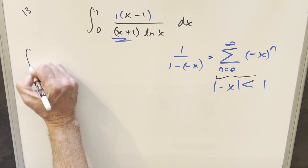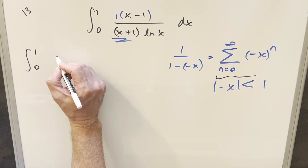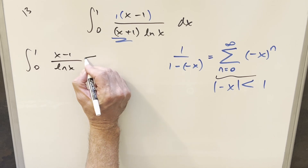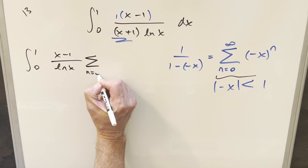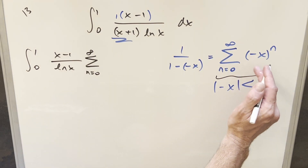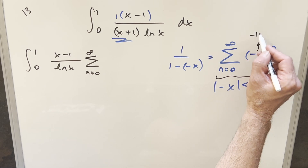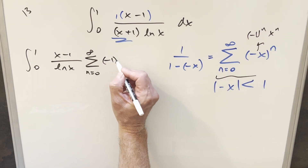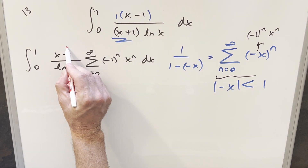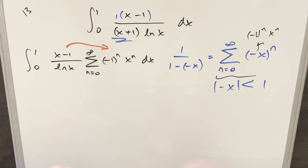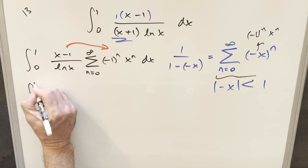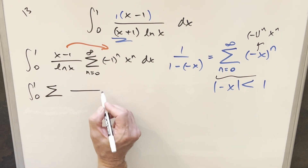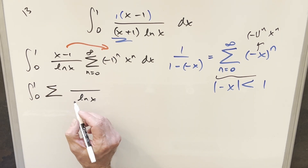So we take this and plug it back into our integral. We haven't touched x minus 1 over ln(x), so we bring that over. When we plug in the series, let's break up the minus 1 — we'll write it as (minus 1) to the n times x to the n. Then let's distribute everything inside the sum. The whole denominator is going to be ln(x).